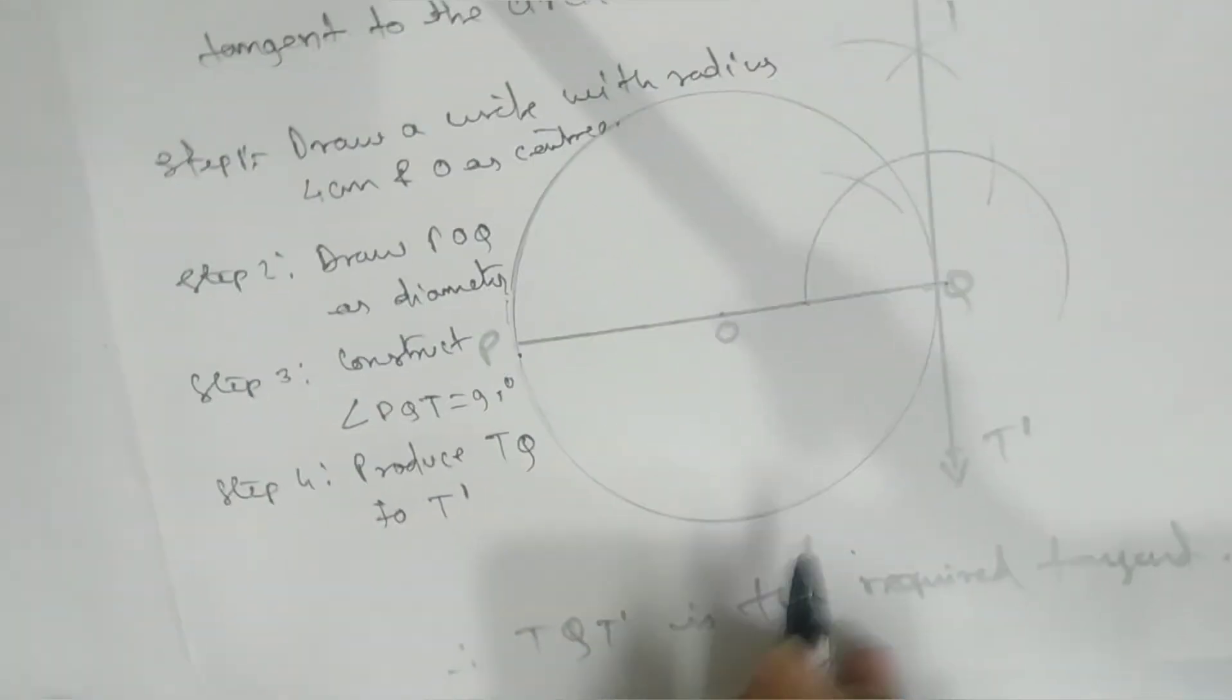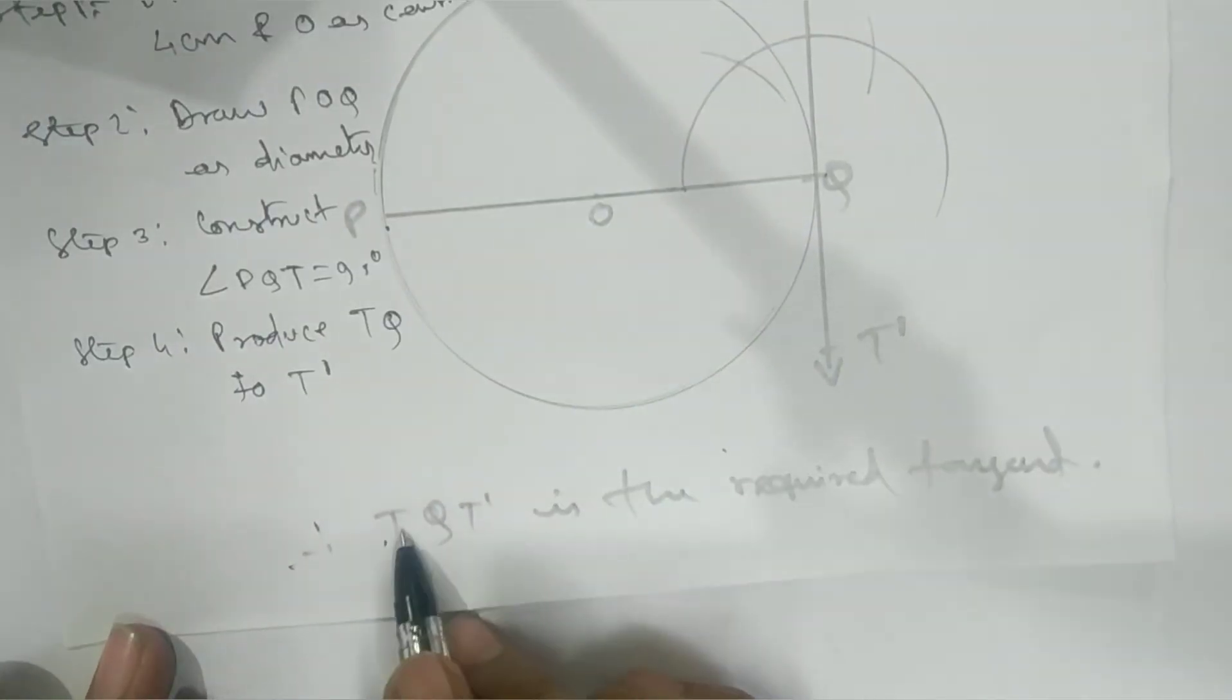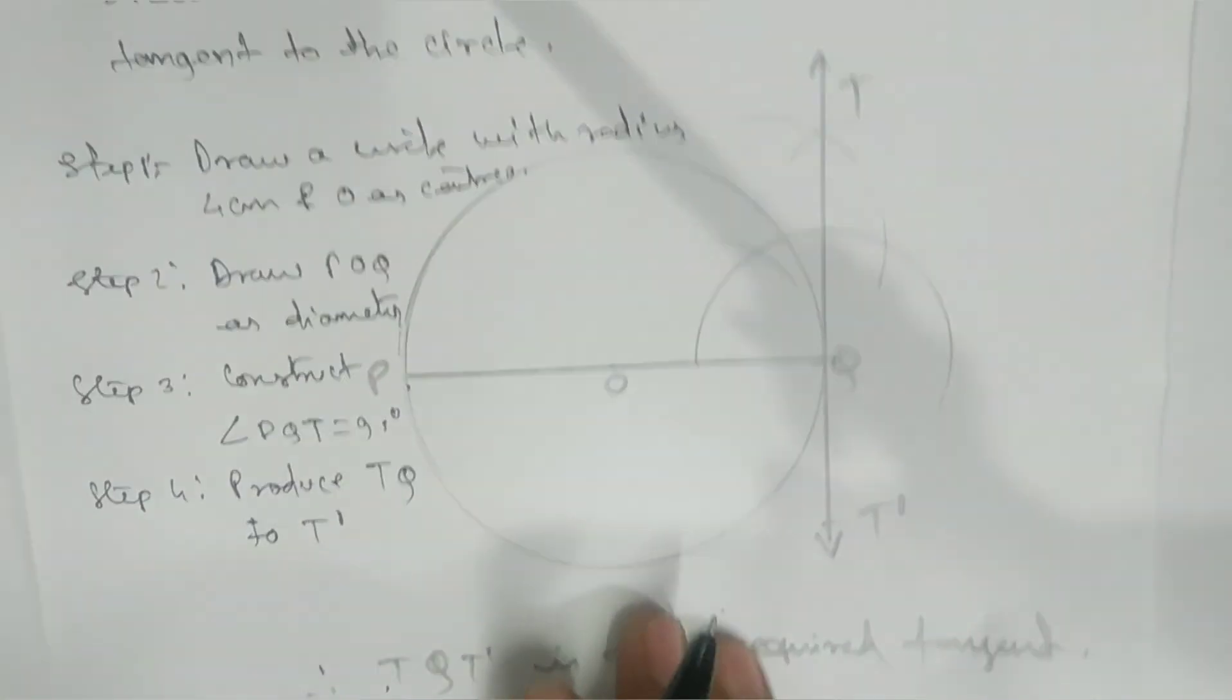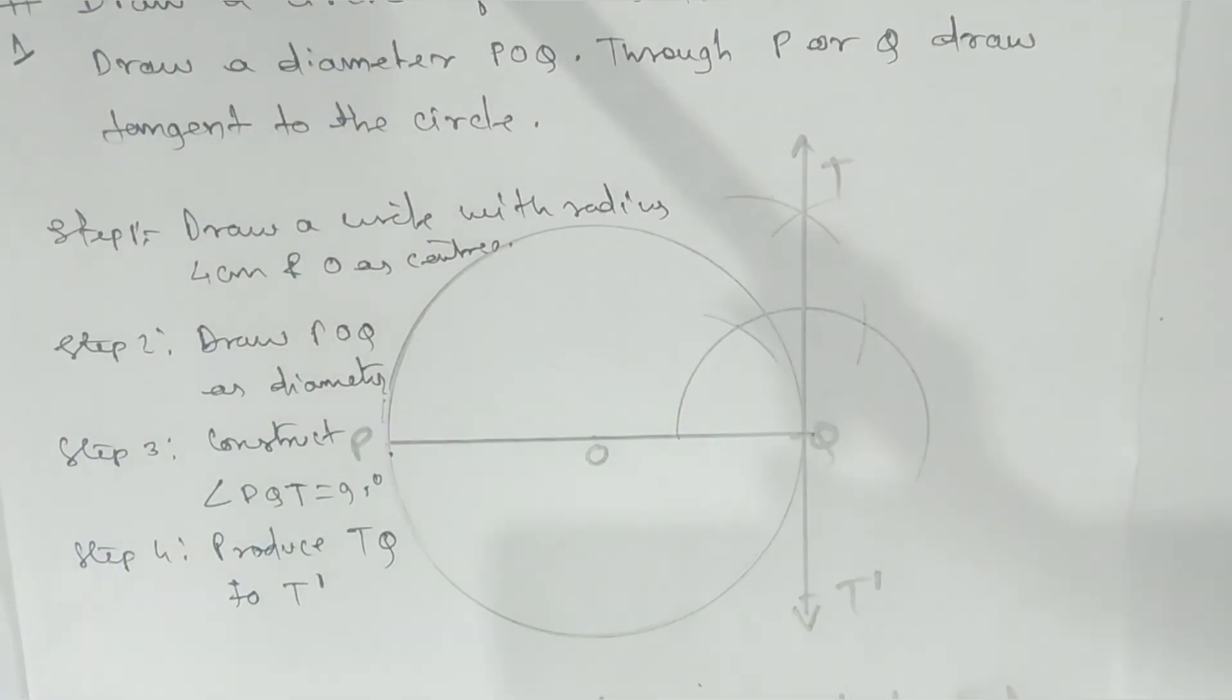Fourth step: Produce TQ to T prime. Therefore, TQT prime is the required tangent. This is our answer for the first problem. Thank you.